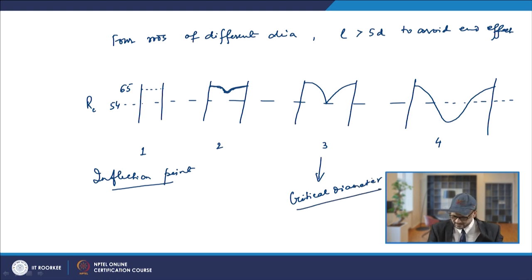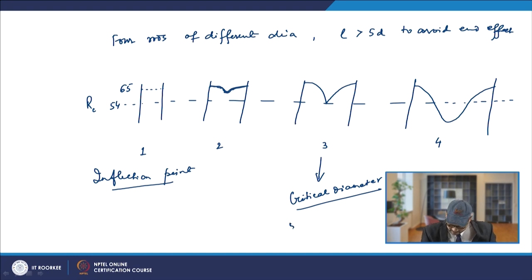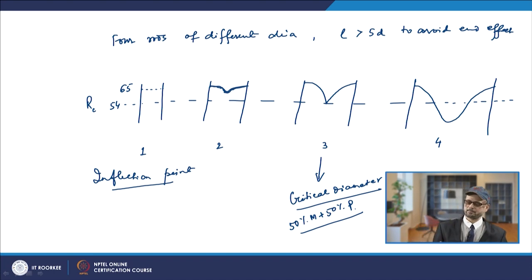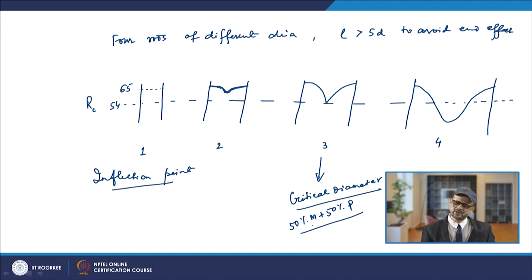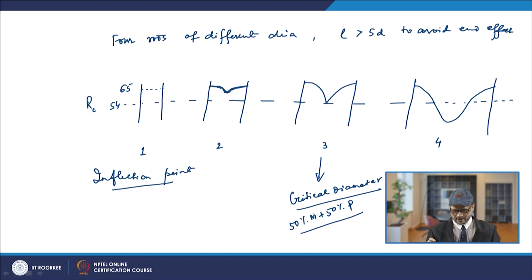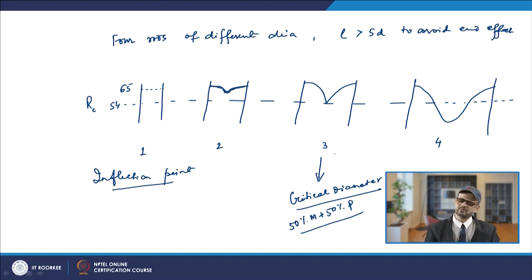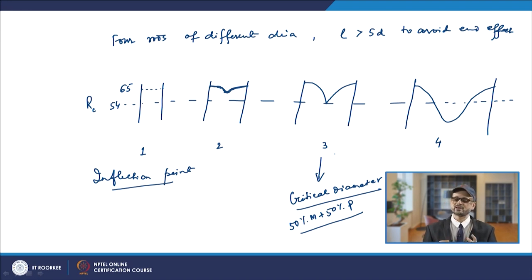For the critical diameter, what you see is that the microstructure at the center is 50% martensite and 50% pearlite, corresponding to a hardness of about 54 Rc. This diameter is known as the critical diameter, and if you take a diameter more than this critical diameter, the rod cannot harden throughout. That is the concept of measuring the hardenability of a steel, as given by Grossman.